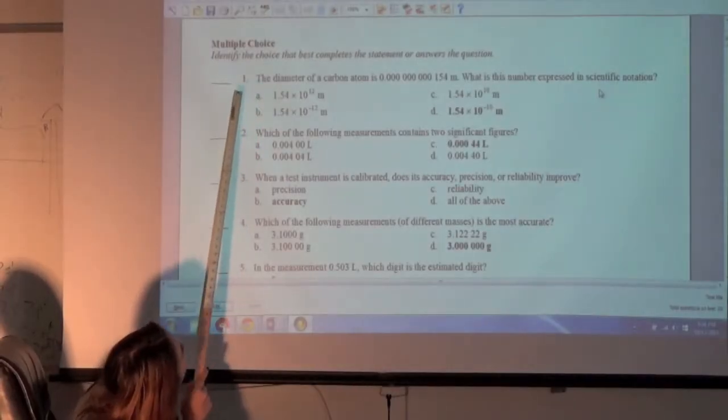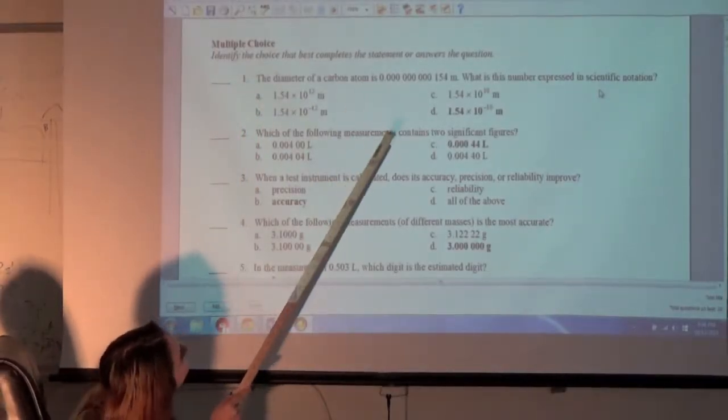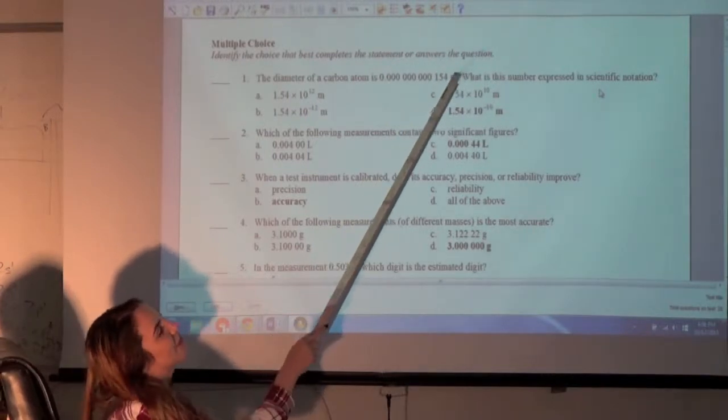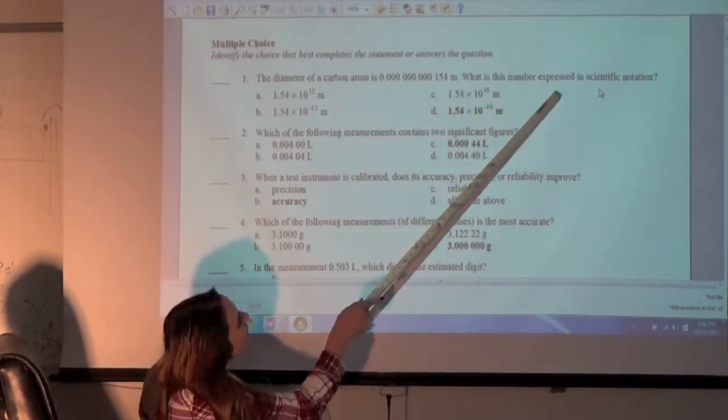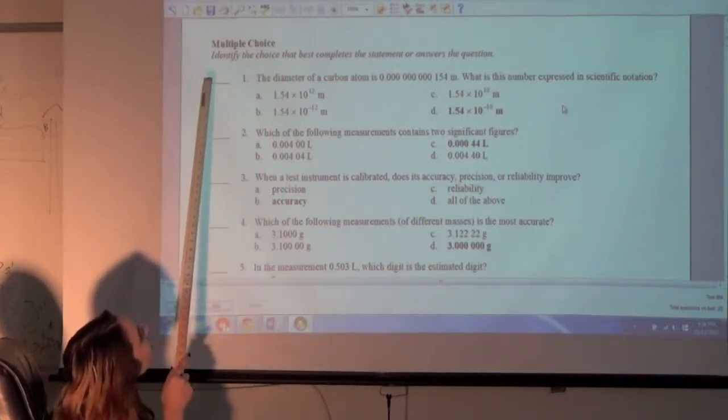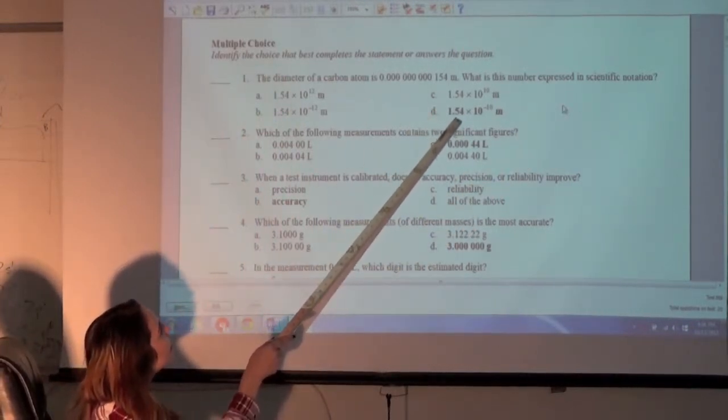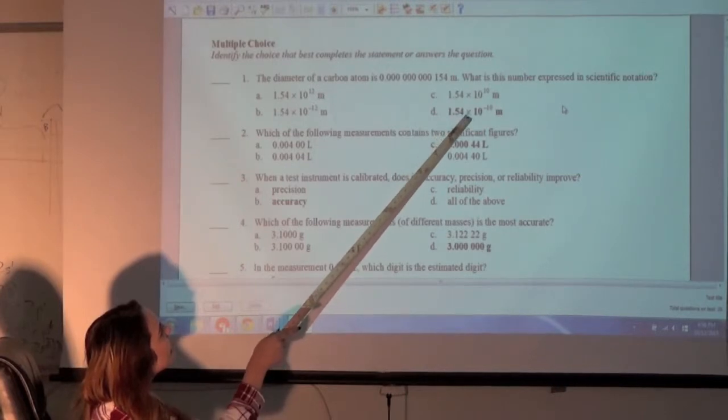Number one, the diameter of the carbon atom is 0.154 millimeter. What is the number expressed in scientific notation? D, 1.54 times 10.